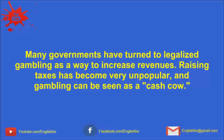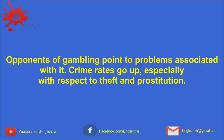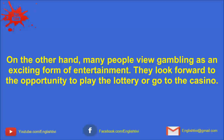Many governments have turned to legalized gambling as a way to increase revenues. Raising taxes has become very unpopular, and gambling can be seen as a cash cow. Large casinos are often considered good for areas with high unemployment. Most new casinos include a variety of slot machines, table games such as blackjack, and roulette wheels. Opponents of gambling point to problems associated with it. Crime rates go up, especially with respect to theft and prostitution. People become addicted to gambling and play until they are broke. Stress is put on families when one member gambles, and the grocery and rent money are spent. On the other hand, many people view gambling as an exciting form of entertainment.